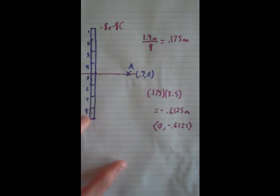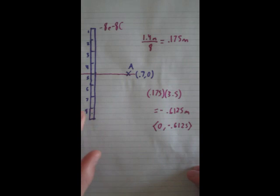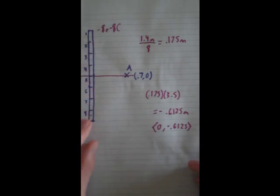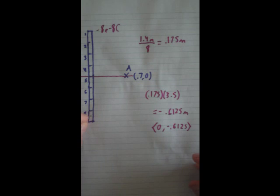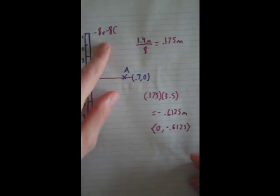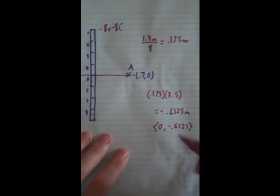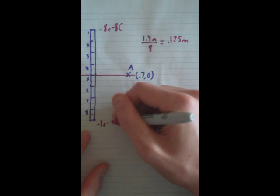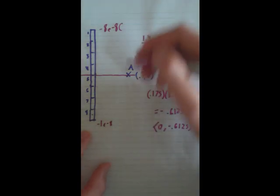Okay, so now we have to figure out how much charge is on this section right here, this eighth section. Well, to do that, it's pretty simple, because since this rod and most rods we will deal with are uniformly charged, that means there's an equal amount of electrons here, here, here, here, and here. So we just divide the total charge, which is negative 8 e to the negative 8 by 8. So we know the charge of this section right here is just going to be negative 1 e to the negative 8, since we just divided that by 8.